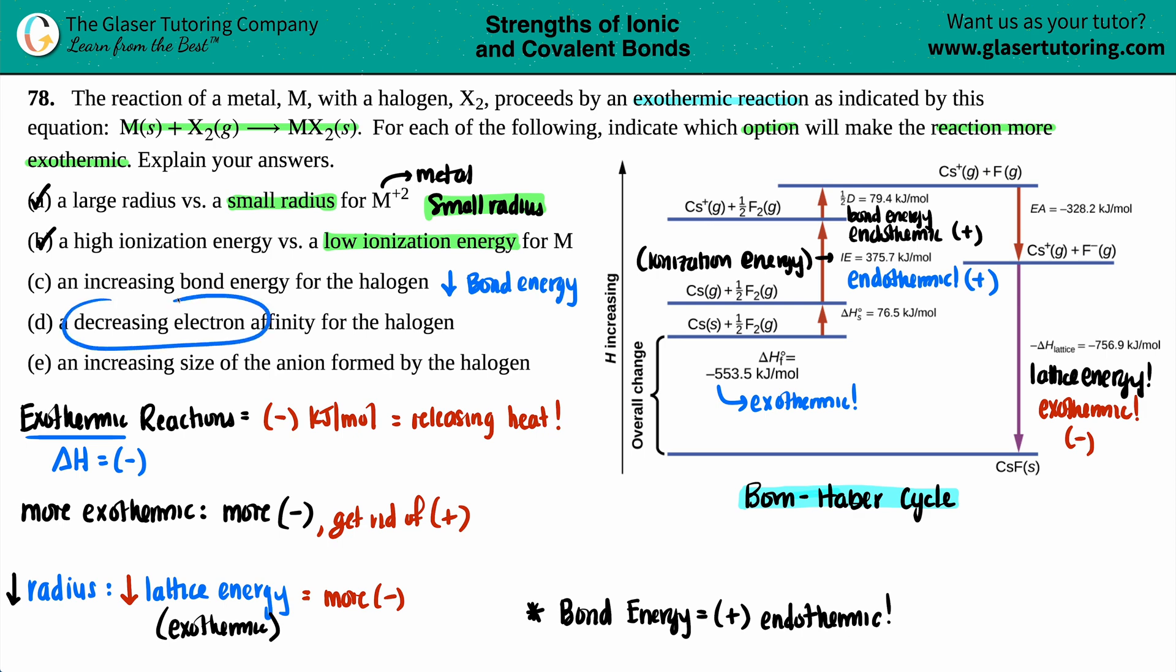Let's see, letter D. A decreasing electron affinity for the halogen? Well, electron affinity is the attractiveness for an electron. And on the Born-Haber cycle, electron affinity is EA. Electron affinity. And it's a negative value. This is exothermic. And if we want to make it more exothermic, we want more negatives or less positives. Electron affinity is a negative. We gain those negatives to make it more exothermic. So in this case, would a decreasing electron affinity make it more exothermic? Absolutely not. We want a higher electron affinity. Because with a higher number, you'll get a higher negative. And can't choose this one either.